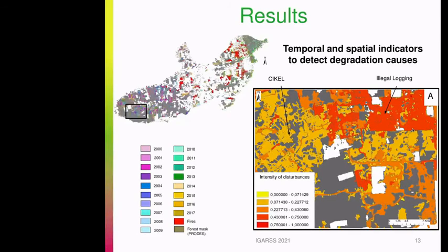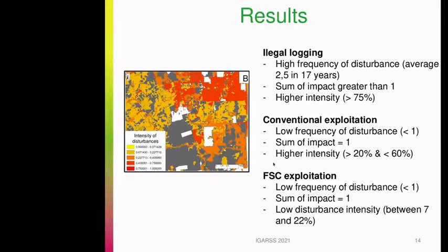Here you can see an example of a landscape metric reflecting the intensity of disturbance over time. This metric allows us to identify the area exploited illegally and the area exploited by Cikel. Illegal areas are characterized by high frequency and intensity of disturbance, while the conventional area shows low frequency and high intensity of disturbance. You can also see the positive effect of certified forest management techniques — over the 17 years studied, FSC forests have only been disturbed once with low disturbance intensity.